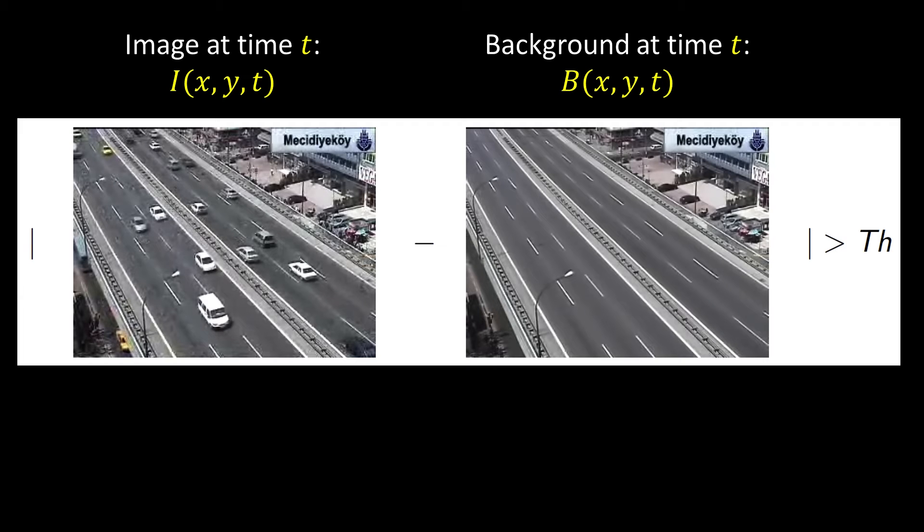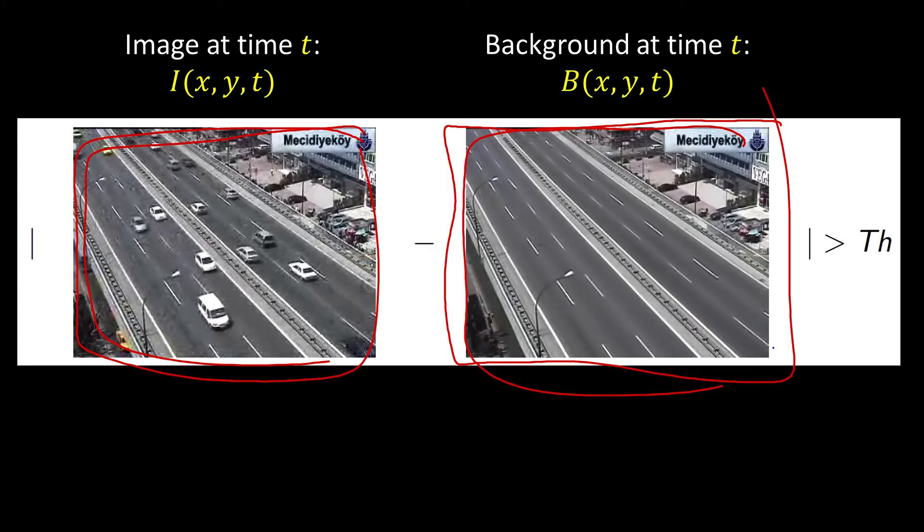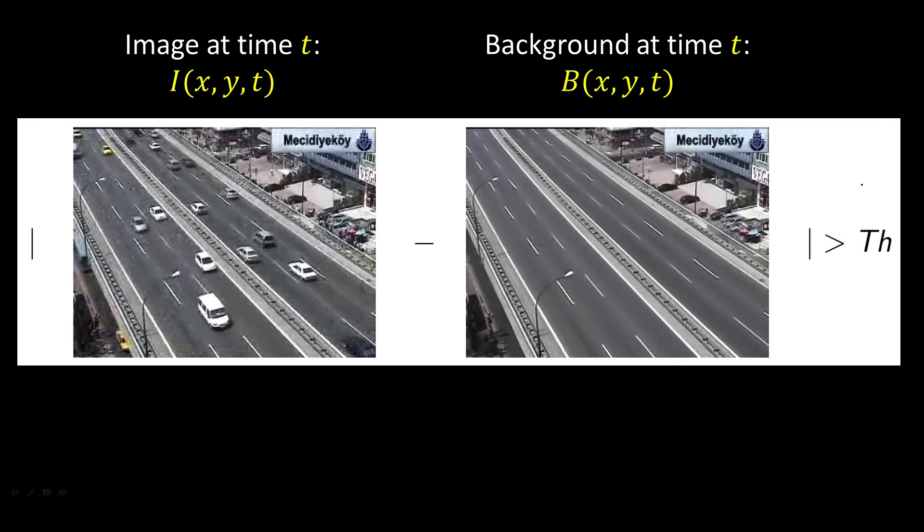Here's an example. So here again, same image, right? And this is my estimated background. We'll talk a little bit later about how you might get such a beautiful background. The idea would be to take your current image, subtract off the background, take the absolute value, and anywhere that it's bigger than the threshold, just output that. But of course, the question is, what's a good estimate of the background?